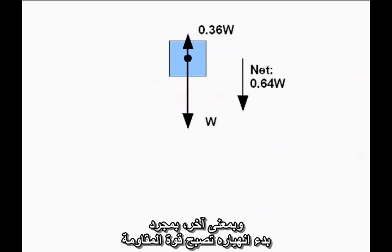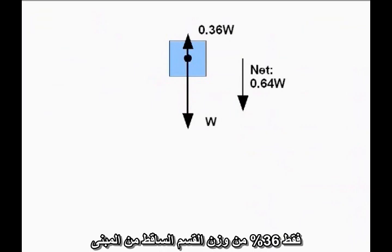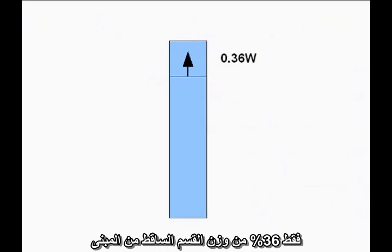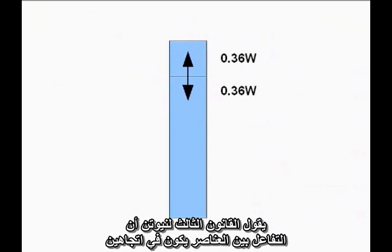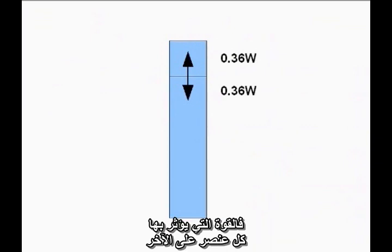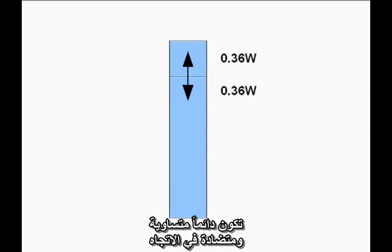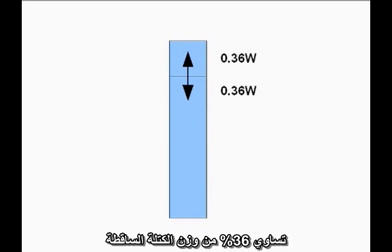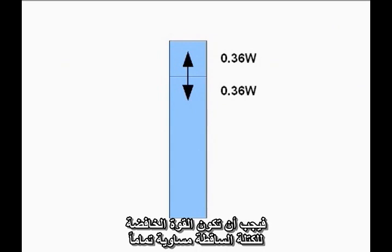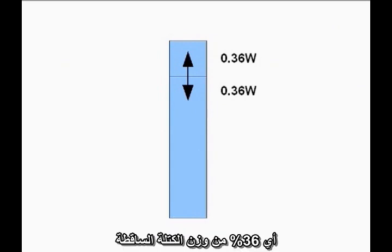First note that there is a sudden onset of collapse, as the point we are tracking makes a sudden transition from being at rest to an approximately constant downward acceleration. In other words, once it starts falling, the upward resistive force is only 36 percent of the weight of the falling section of the building. Newton's Third Law says interactions between objects work both ways — the forces two objects exert on each other are always equal and opposite. If the upward force acting on the falling block is 36 percent of the weight of the falling block, the downward force exerted by the falling block must be exactly the same: 36 percent of the weight of the falling block.